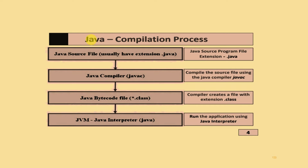The Java compilation process: first, you write Java source code - the source file, whose extension is usually .java. Next, using the Java compiler (JAVAC), the compiler creates a file with the extension .class - the Java bytecode file. Finally, you run the application using the Java interpreter for Windows, Linux, or Macintosh. This is the complete Java compilation process.